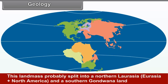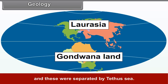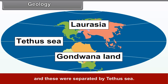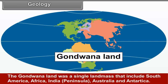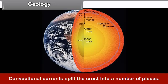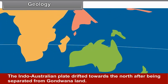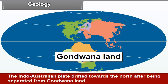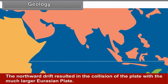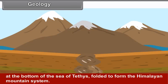The present physical structure of India is the result of a long geological process. India is known for its wide-ranging geological features as well as variety of minerals. Generally, India is composed of three physiographic units: the Himalayan mountains, the northern plains and the peninsular plateaus. Earlier, all the major landmasses were together called Pangaea — a huge single supercontinent. The landmass probably split into a northern Laurasia (Eurasia plus North America) and a southern Gondwana land, separated by the Tethys Sea.